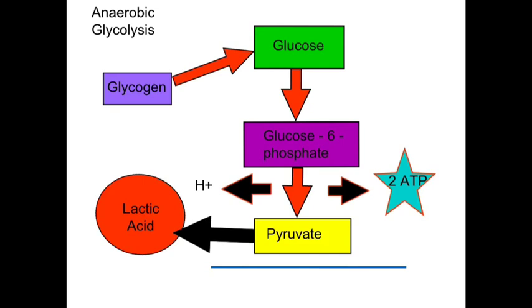During this process, enough energy is released to reform two molecules of ATP and some hydrogen ions are released. The hydrogen ions are combined with oxygen from respiration and the electron transport chain to form water. However, at some point — dependent on your VO2 max — so much hydrogen enters the electron transport chain that it exceeds the amount of oxygen available.